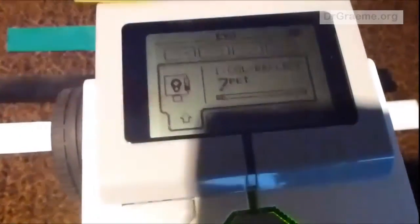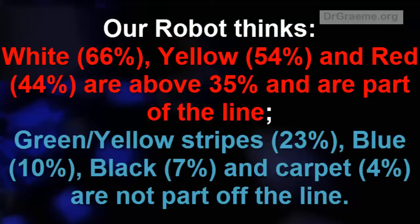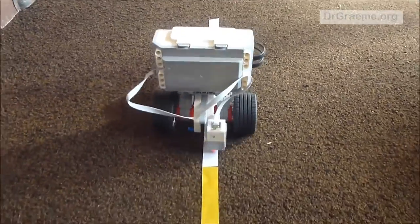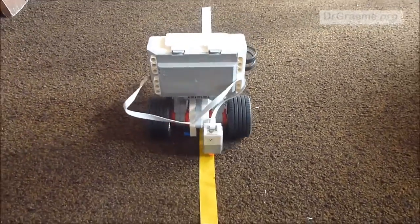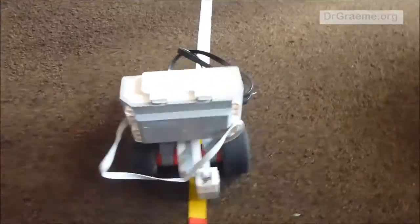So for our robot, white, yellow, and red are part of the line. And the green stripe, the blue, black, and the carpet are not part of the line, as you can see here.